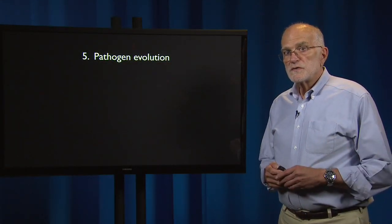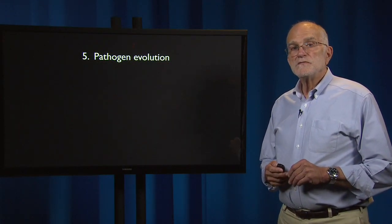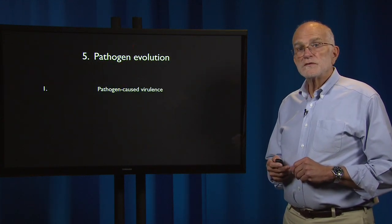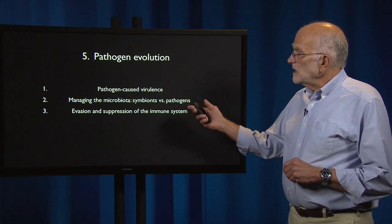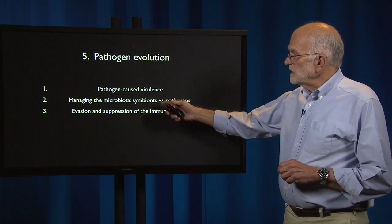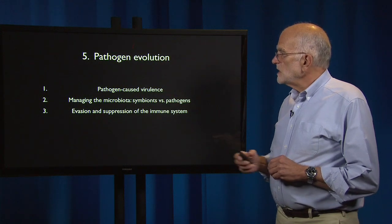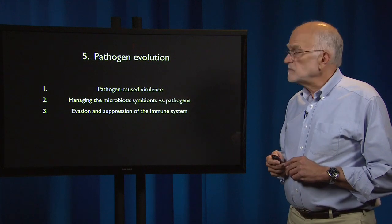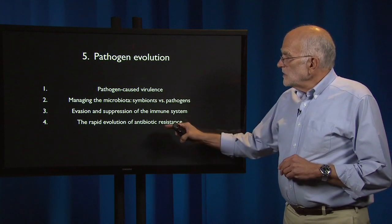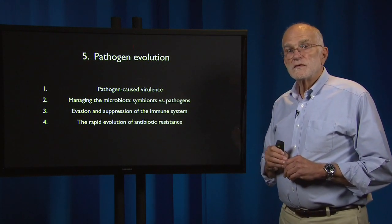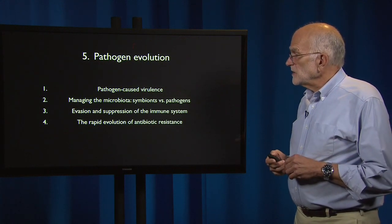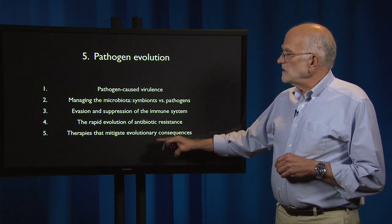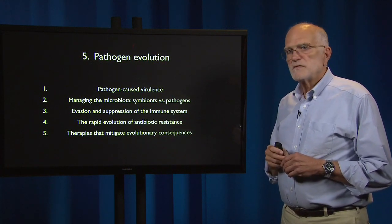We are now going to have a series of lectures on how pathogens evolve. The first lecture will deal with pathogen-caused virulence, the second with how the microbiota are managed and the distinction between symbionts and pathogens, the third with how pathogens have evolved to evade and suppress the immune system, the fourth deals with the rapid evolution of antibiotic resistance, and the fifth concerns therapies that can mitigate the consequences of that kind of evolution.